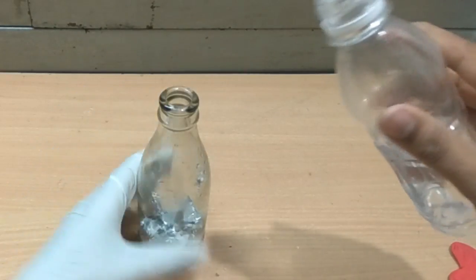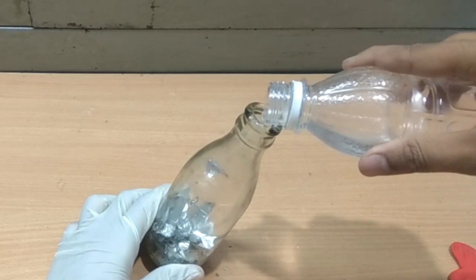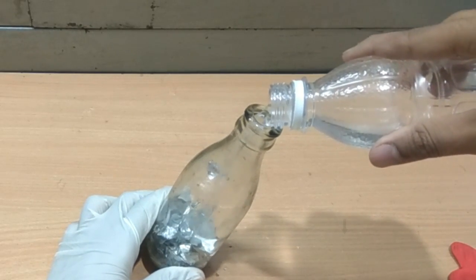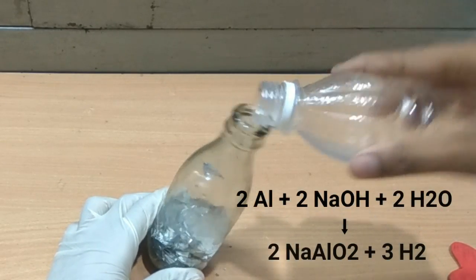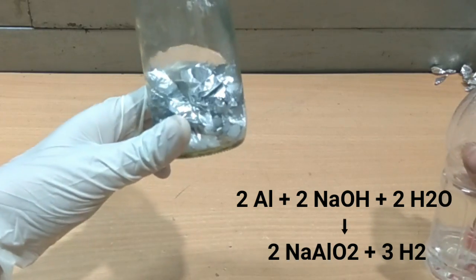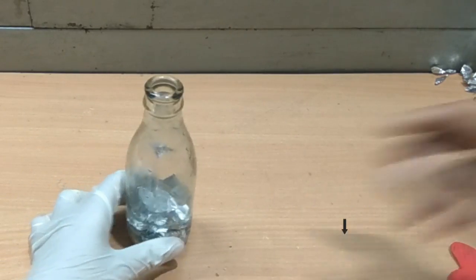Solid NaOH dissolves in water and starts reacting with the aluminum. This reaction will occur in the glass bottle and release hydrogen gas. Give a quick shake to the water.